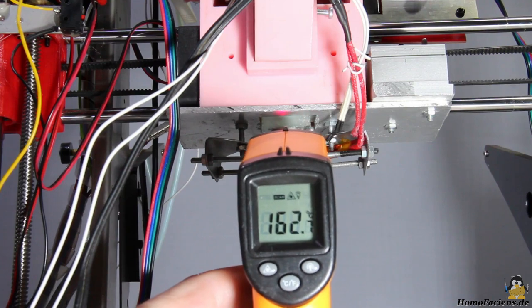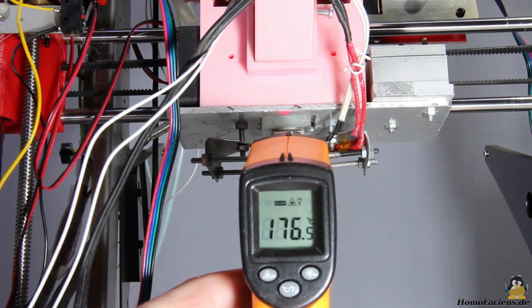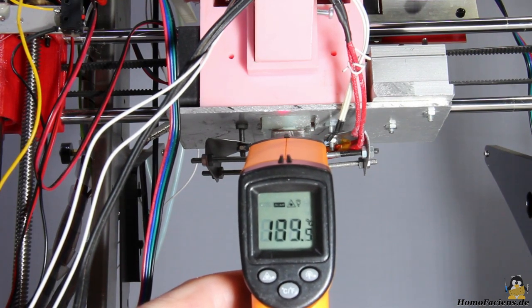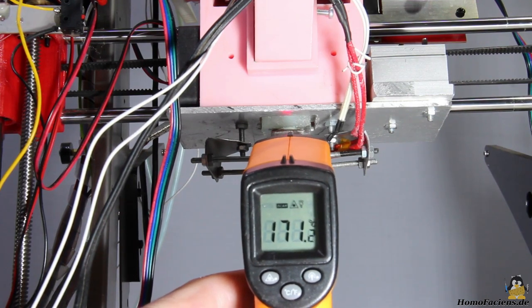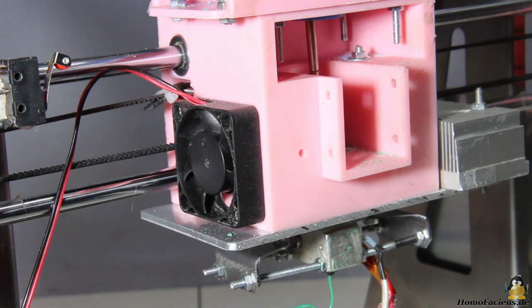A temperature gradient must be maintained in the extruder during operation for which the hot end is heated electrically with the help of a heating cartridge, while the cold end is cooled with the help of a fan.